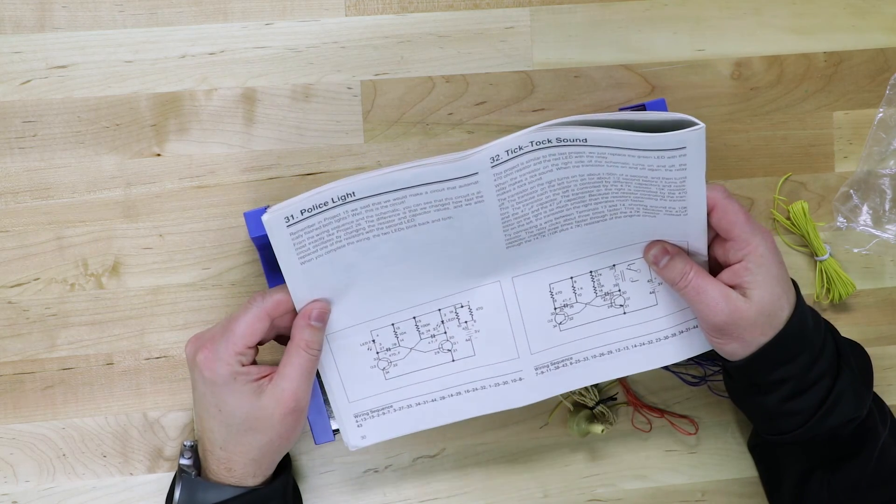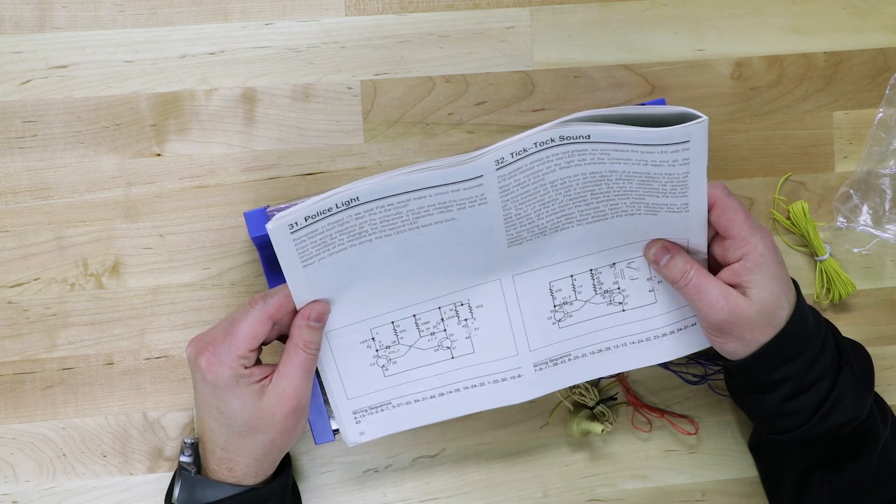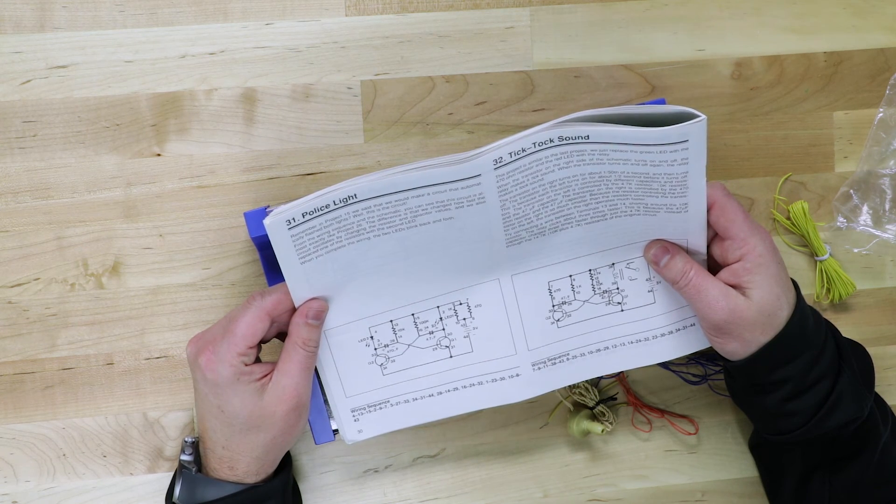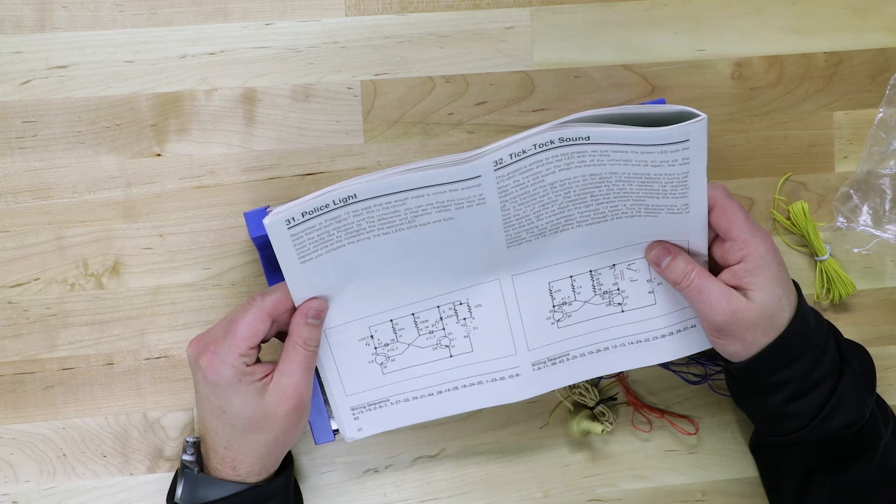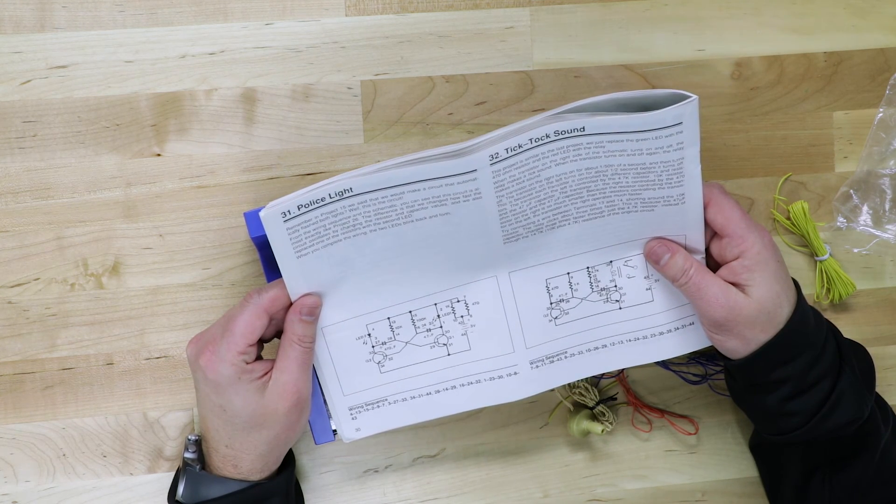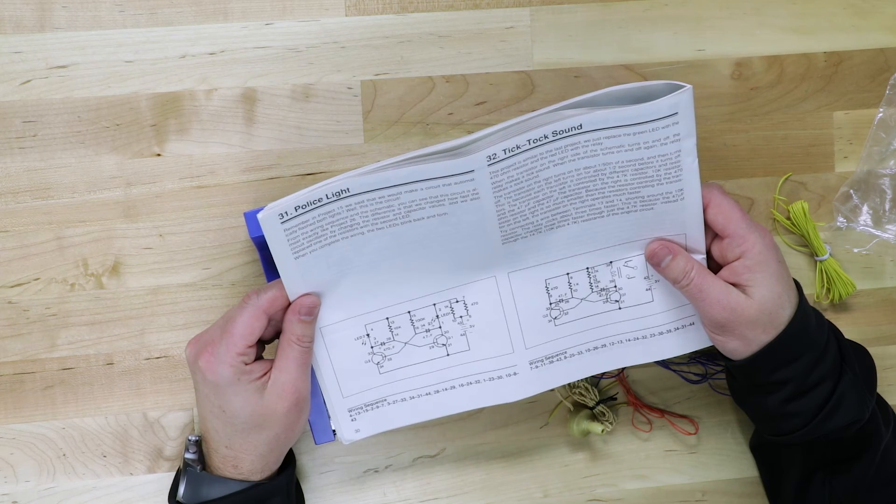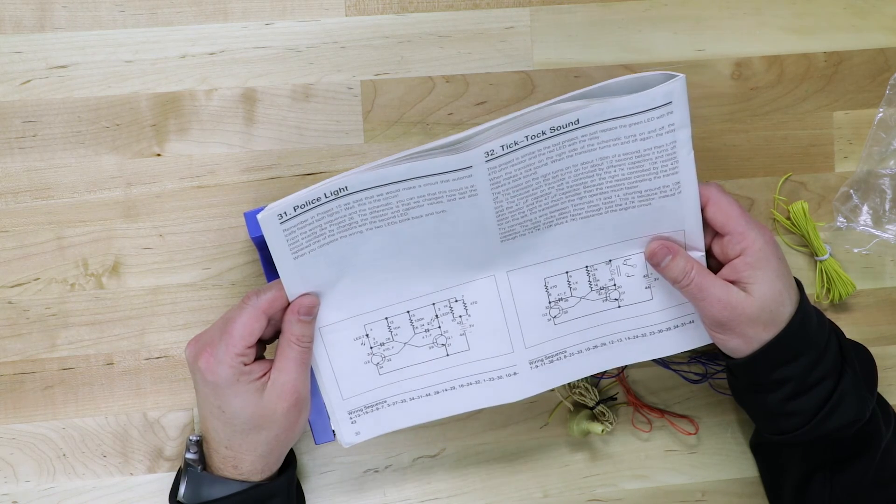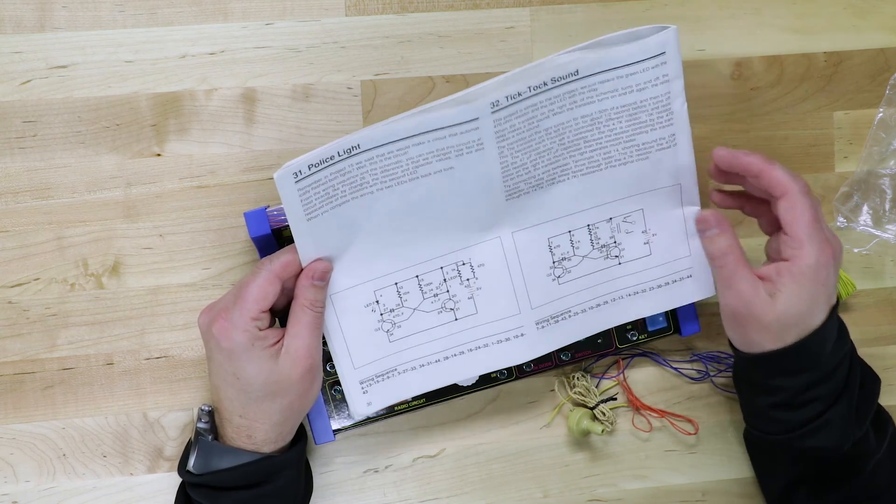remember in project 15, we said that we would make a circuit that automatically flashes both lights. Well, this is the circuit. From the wiring sequence and the schematic, you can see that this circuit is exactly like project 26. The difference is that we changed how fast the circuit oscillates.